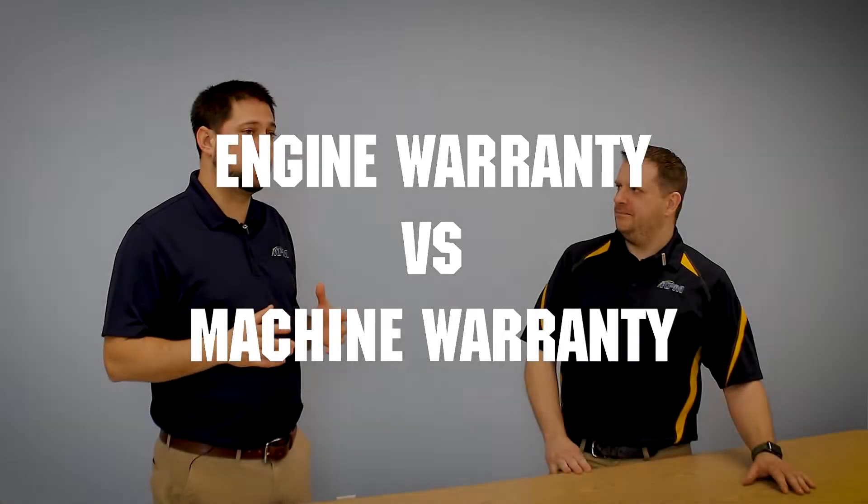So this is a commonly misunderstood item. And it has to do with the engine warranty versus the overall machine warranty from any manufacturer. Can you tell us a little bit about that? So the mower, say if it's a Scag mower, the mower is going to be covered by Scag. The engine will be covered under the engine manufacturer. So depending on if it's a Vanguard, a Kohler, or a Kawasaki, that's who you have to go to for that engine warranty. They will ultimately make the decision on what will be covered under warranty, not so much Scag.